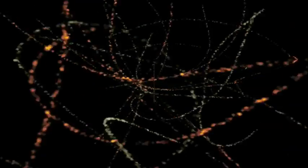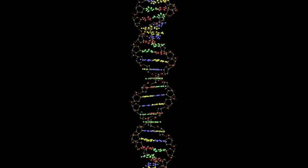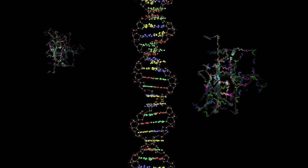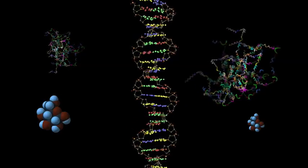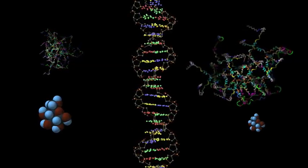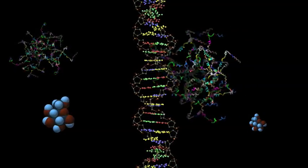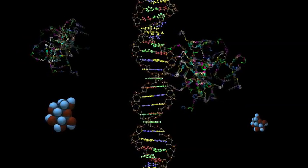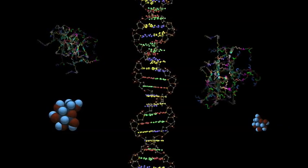All life on Earth shares the same molecules that allow life to function. Regardless of species, the polynucleotides like DNA and RNA, polypeptides like proteins, and polysaccharides like starches and glucose, are identical. DNA, RNA, and proteins all have the same chemical form, in spite of the fact that there are dozens of possibilities that would work.